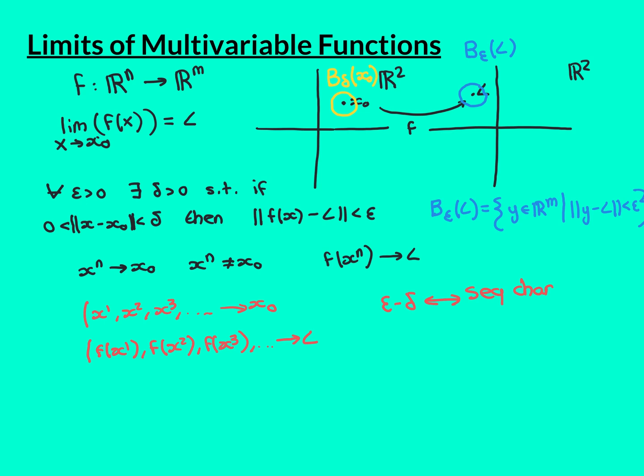By the epsilon definition of the convergence of a sequence, I need to find a term in this sequence such that it and everything beyond it is within epsilon distance of my limit vector L, i.e. within the epsilon ball around L.